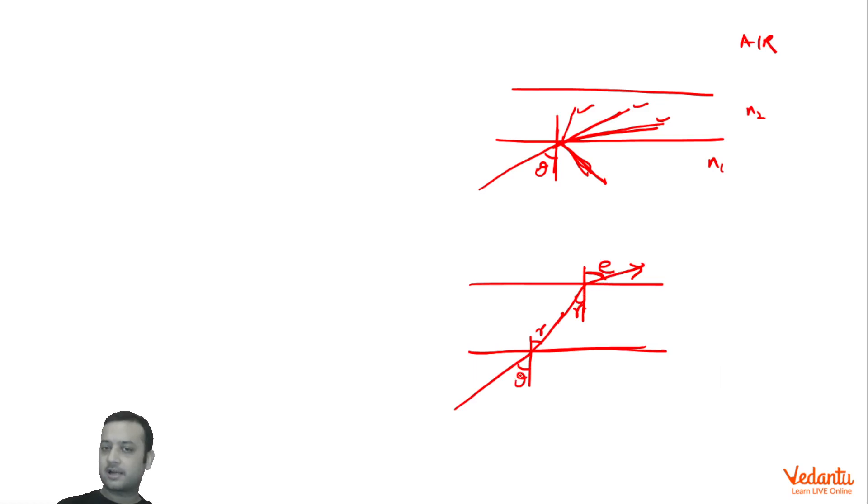Now I can apply Snell's law at this interface and this interface. This is N1, this is N2, this is air. I can directly apply Snell's law from here to here: N1 sin theta equals N2 sin R equals 1 sin E. So N1 sin theta equals sin E. Now sin theta equals sin E upon N1, which was greater than 1 by N1 in the question. Which means sin E is greater than 1, which is impossible.